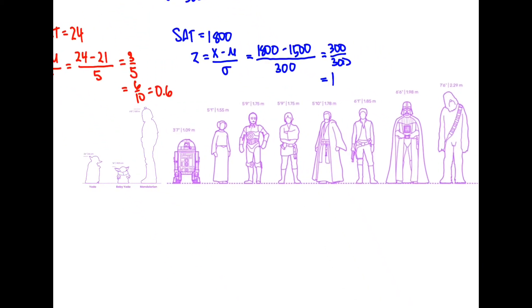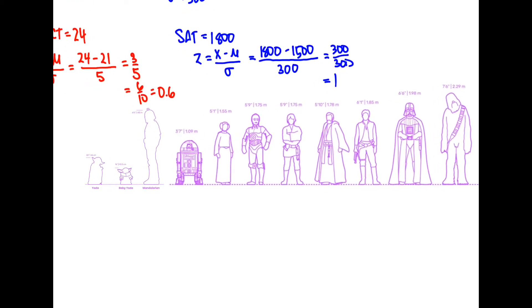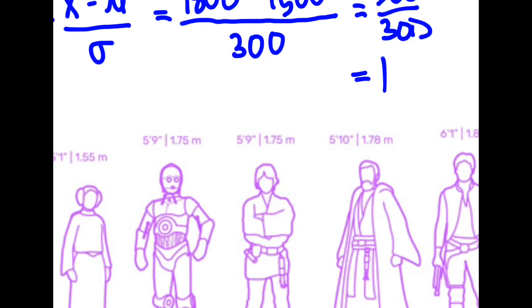Let's do one more example here. And here we got the heights of some popular Star Wars characters. And you can see that R2-D2 is 3'7", Princess Leia is 5'1", C-3PO is 5'9", so is Luke Skywalker, etc., all the way up to Chewbacca, who's 7'6". And Baby Yoda is, of course, 16 inches. Full-size Yoda, 26 inches. So let's ask this question. So we want to know what percent of the U.S. population, male population, is taller than Luke Skywalker. So we see here that he is 59 inches, right? So 5'9", I believe, is the same as 69 inches.